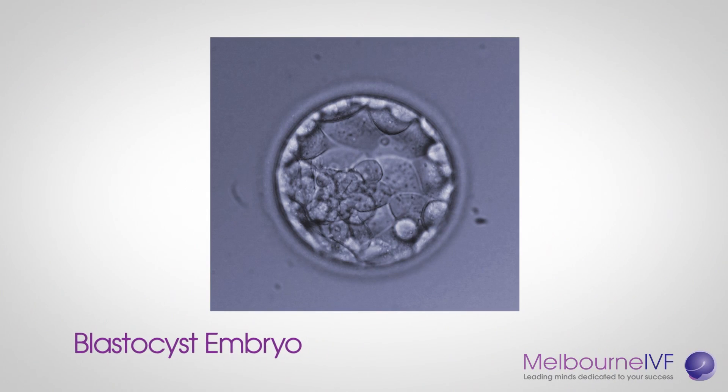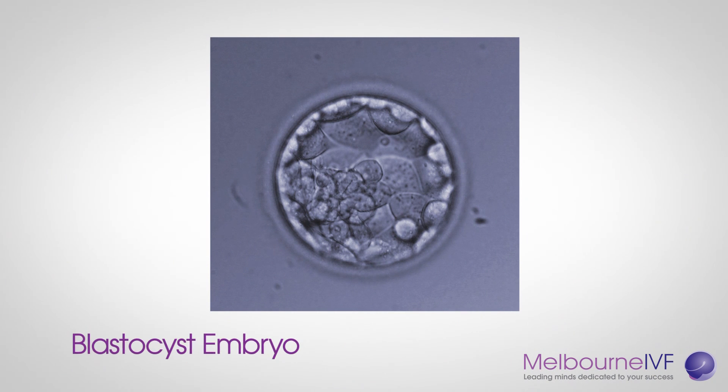Embryos developed to day five or six are known as blastocysts. By day five, the embryos will have divided and may contain up to 100 cells or more.